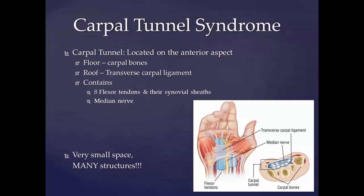Carpal tunnel syndrome is a medical condition due to compression of the median nerve as it travels through the wrist at the carpal tunnel. The main symptoms are pain, numbness, and tingling — in the thumb, index finger, middle finger, or the thumb side of the ring finger. Symptoms typically start out gradually during the night, and pain may eventually extend up into the arm.